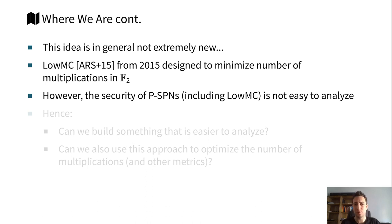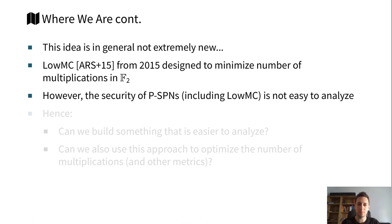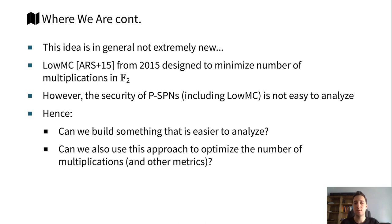This idea is in general not extremely new. For instance, there is the LowMC cipher from 2015, which is already designed to minimize the number of multiplications. However, the multiplications are in F_2, which is a lot smaller than the large prime fields discussed before. Another problem of LowMC and of PSPN ciphers in general is that they are not very easy to analyze from a security point of view. Hence the question remains: can we build something which is much easier to analyze against some attacks, and which we can also use to optimize the number of multiplications or other metrics?